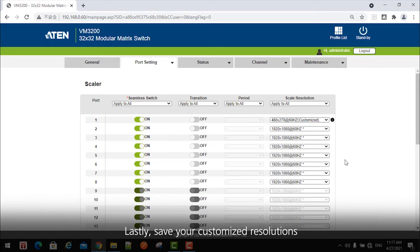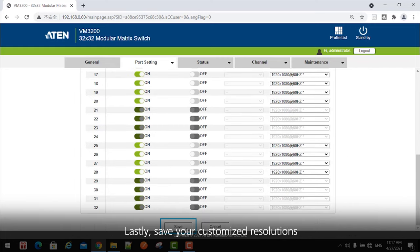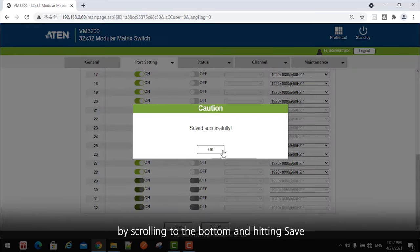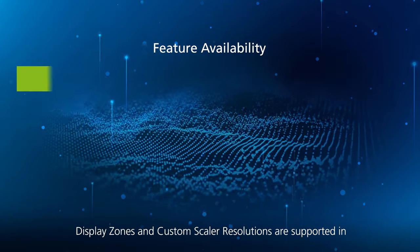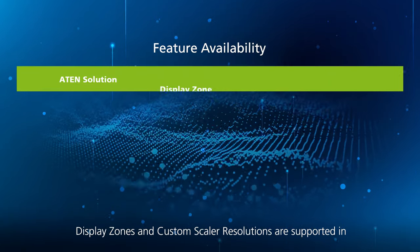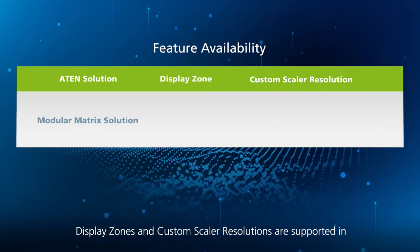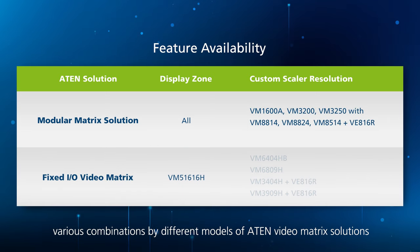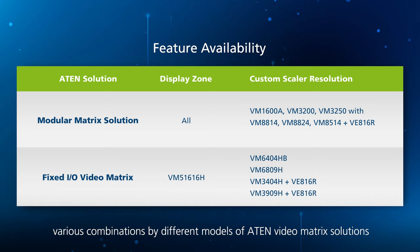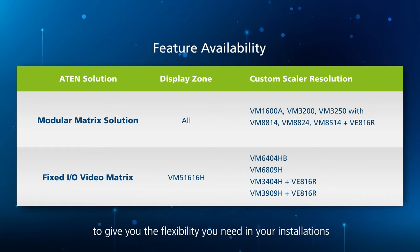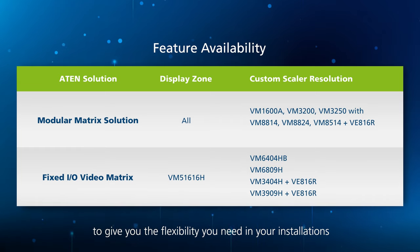You can now select your custom resolution from the drop-down tab. Lastly, save your customized resolutions by scrolling to the bottom and hitting Save. Display zones and custom scaler resolutions are supported in various combinations by different models of A10 video matrix solutions to give you the flexibility you need in your installations.